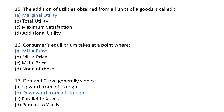Next question: the addition of utility obtained from all the units of goods consumed — basically, when you add up the utility from all units of a commodity, that is called total utility. But an additional unit of utility from one more unit is marginal utility. The answer will be A: marginal utility.